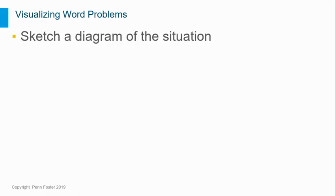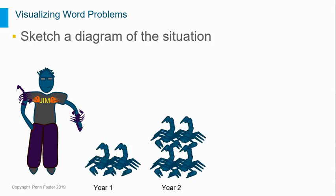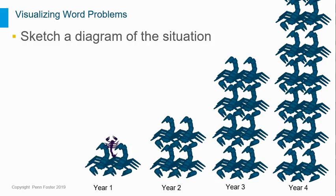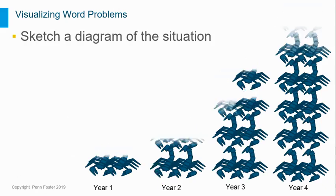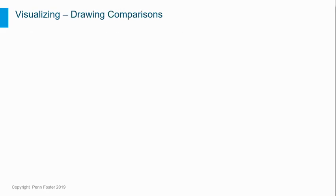For example, if Jim is breeding scorpions at an exponential rate, you don't need to draw Jim or even scorpions. Instead, draw a chart or bar graph representing the changing number of scorpions.